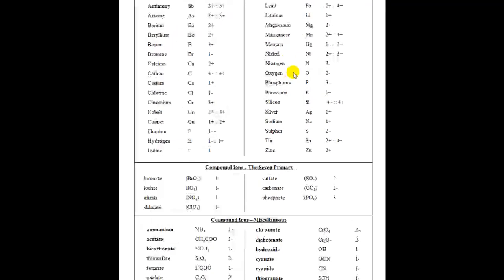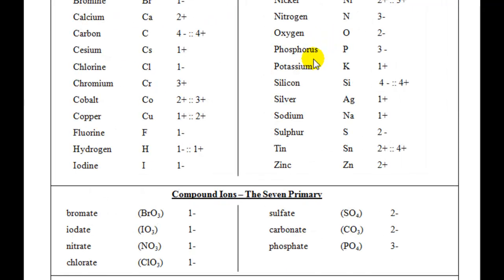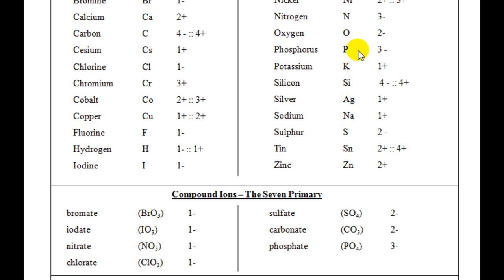If you saw an -IDE — so a phosphide — then yes, it would be the phosphorus 3- up in the single elements section. But if you see phosphate, you need to look down here at PO4 — two different things. Please make sure you don't make that mistake. Phosphide with -IDE, phosphate with -ATE — two different compounds.